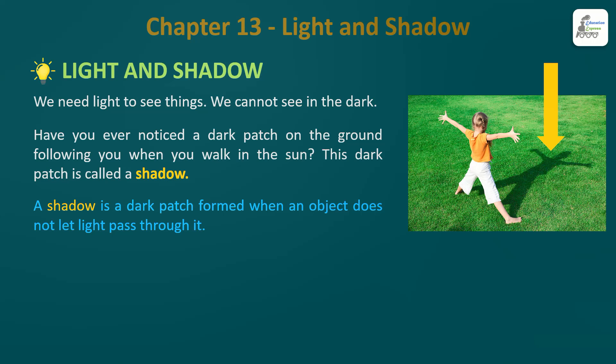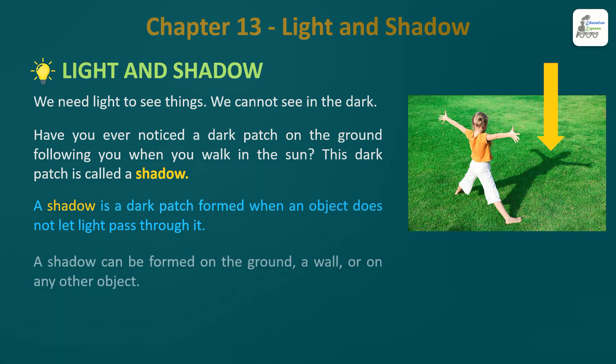Object mein se light nahi jaayegi - when an object does not let light pass through it. Jo jo dark ghana object rehta hai, jaisa ki agar suppose kaach hai ya phir glass hai toh glass ka shadow zyada nahi padega - ikdam chota sa dhima. Lekin agar suppose aapki pencil hai ya phir kaati hai - stick hai - toh uska shadow hamesha dikhega aapko, kyunki usse light pass nahi ho paata, woh ghana hota hai. So yeh aise hota hai - when an object does not let light pass through it.